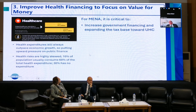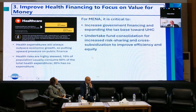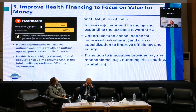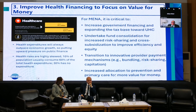For MENA, it is critical to: increase government financing and expand the tax base toward universal health coverage; undertake fund consolidation to reduce fragmentation and increase risk sharing and cross-subsidization; transition to innovative provider payment mechanisms like bundling, risk sharing, and capitation — since simply paying salaries has proven inefficient and does not improve quality; and increase allocation to prevention and primary care for more value for money.